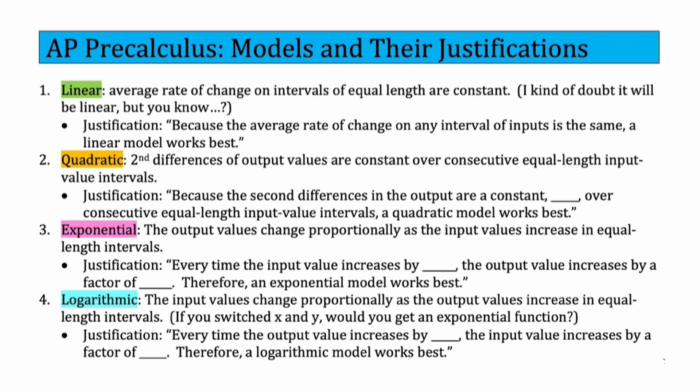And then logarithmic is probably the weirdest one, because it's actually, if the outputs increase by the same amount, the inputs will change proportionally. And basically, when I'm trying to figure out if it's logarithmic, in my head, what I do is just switch the rows of the table, right? So make the outputs, the inputs, the inputs, the outputs. When you switch them, if you got exponential again, then the real answer would be logarithmic. So if you switch to x and y, you would get an exponential function if logarithmic is the correct answer. But the input values change proportionally as the output values increase in equal length intervals. It's definitely the weirdest one. So when you're looking at a table, if you're like, man, this table's weird, like initially your brain will tell you there's almost no pattern in the x values. That's almost certainly logarithmic. And our justification will be every time the output value increases by blank, whatever, five, 10, one, something, the input value will increase by a factor of blank. Therefore, a logarithmic model works best. So that's what you're going to want to do. Definitely, this is something you can study for, memorize everything on this page. I hope this was helpful and good luck.